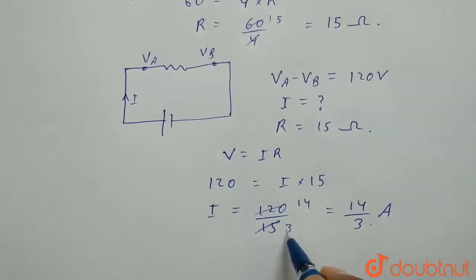So it will be 14 by 3 amperes. We will divide this 3 times, it will be divided by 3 times by 5 and by 5, it will go by 14 times.